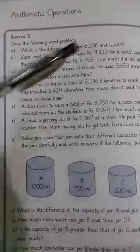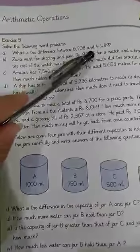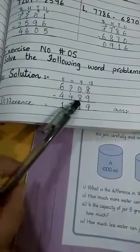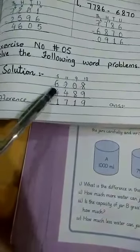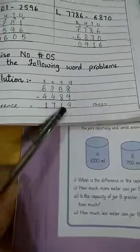Solve the following word problems. Number A is: what is the difference between 6208 and 4489? Students, you have to subtract this. You can see over here. You have to place the values vertically. You will write the bigger number on the upper side and the lower number on the downward. And you have to subtract the units, tens, and hundreds.